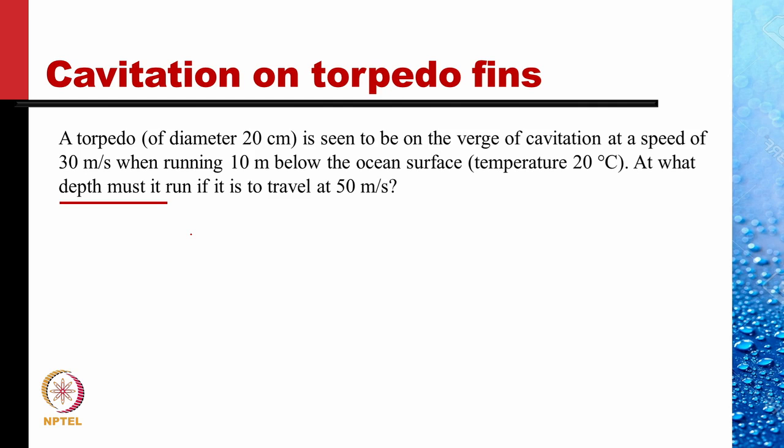The problem is to determine at what depth must the torpedo run if it is travelling at 50 meters per second. The pressure drop would be larger at that speed. Since the cavitation pressure is the same at 20 degrees Celsius, the ambient pressure must be larger, meaning the torpedo must run much deeper than 10 meters below the ocean surface to avoid cavitation.